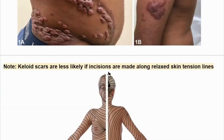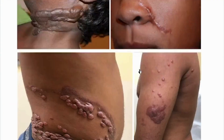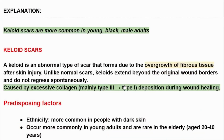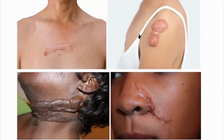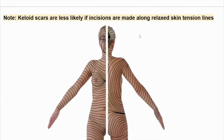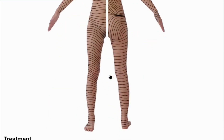Keloid scars are less likely if incisions are made along relaxed skin tension lines. One of the answer choices was incisions along relaxed skin tension lines, and this decreases the risk of keloid scar formation. These lines are called skin tension lines — if the incision is done along these relaxed skin tension lines, the risk of keloid scar formation decreases importantly.